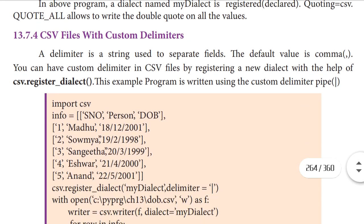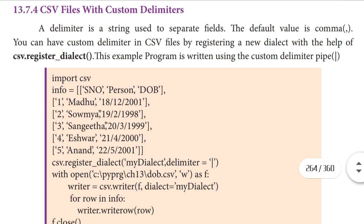Next we are going to see CSV file with custom delimiters. A delimiter is a string used to separate fields. The default value is a comma. You can have a custom delimiter in a CSV file by registering a new dialect with the help of csv.registerDialect. In this example, the custom delimiter used is the pipe symbol.